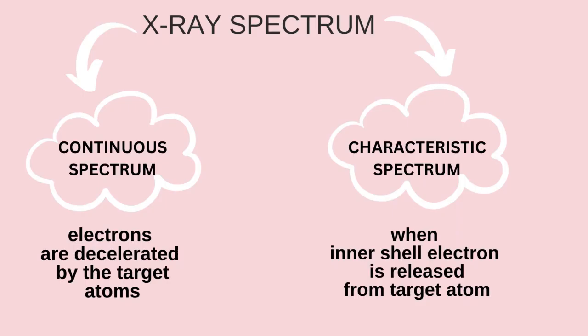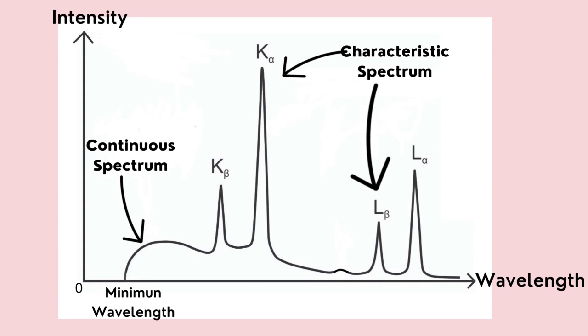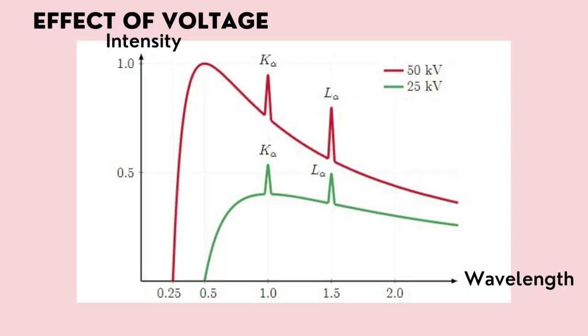The x-ray spectrum consists of continuous spectrum and characteristic spectrum. Continuous spectrum is produced when the electrons are decelerated by the target atoms, while characteristic spectrum is produced during electron transition processes that occur when an inner shell electron is released from the target atom. In continuous spectrum, the intensities vary smoothly with wavelength, while characteristic spectrum consists of sharp peaks of high intensity at specific wavelengths, which are unaffected by the voltage of the x-ray tube.